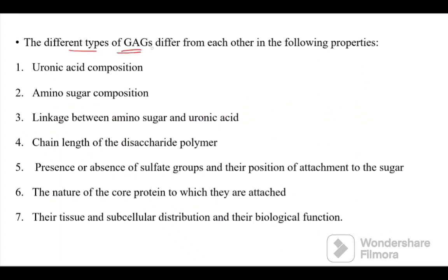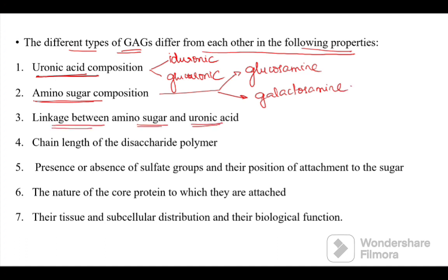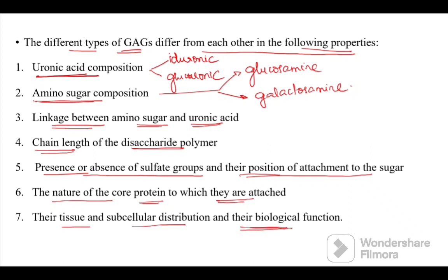The different types of glycosaminoglycans differ from each other in uronic acid composition (iduronic acid or glucuronic acid), amino sugar composition (N-acetylglucosamine or N-acetylgalactosamine), linkages between amino sugar and uronic acid, chain length of the disaccharide polymer, presence or absence of sulfate groups and their position, the nature of the core protein, tissue and subcellular distribution, and biological functions.